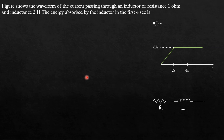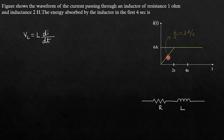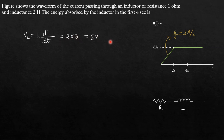We know that the voltage across the inductor is given by V = L·di/dt. We can find di/dt because the current waveform is given. In the first 0 to 2 seconds, di/dt is the slope of the waveform, which is 6 divided by 2, that is 3 amperes per second. So the voltage is L × di/dt = 2 × 3 = 6 volts for the duration 0 to 2 seconds.